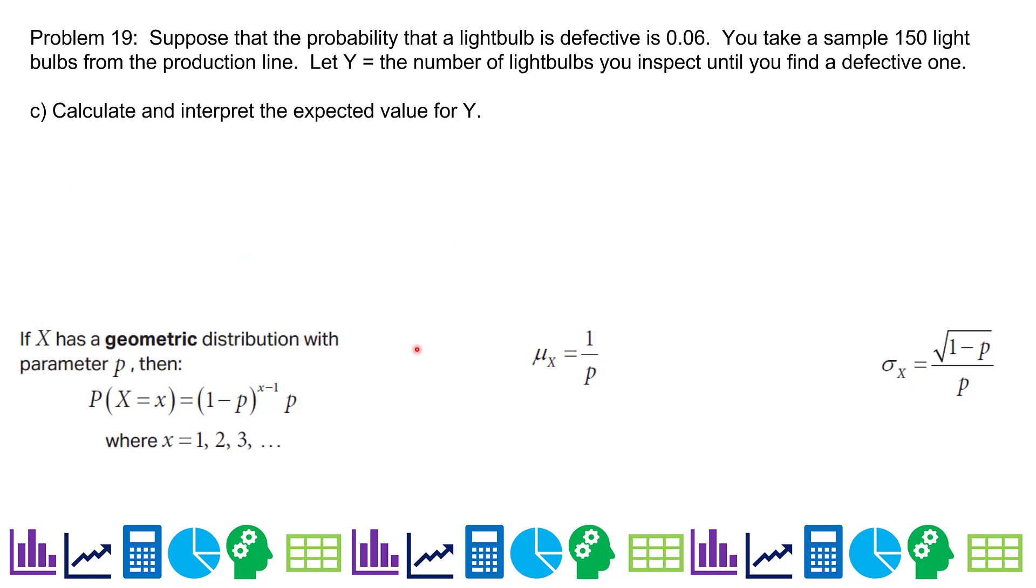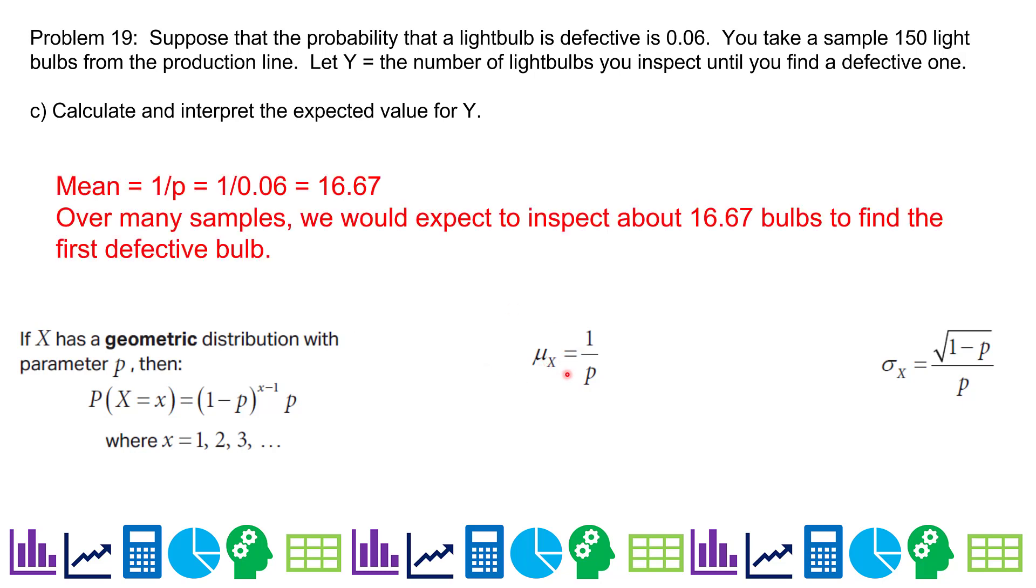Calculate and interpret the expected value of Y. So we're going to use this part of the formula here. We do 1 over P, 1 over 0.06, which is 16.67. And if we were to interpret it, we say over many samples, we would expect to inspect about 16.67 bulbs before finding when we find the first defective bulb.